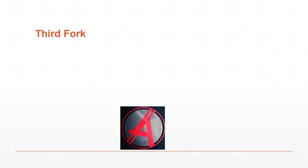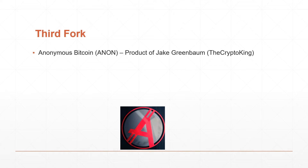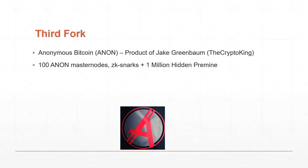The third fork is the Anonymous Bitcoin fork. It's a product of Jake Greenbaum. The main selling features of this coin are the masternodes, which require 100 Anonymous Bitcoins, and a hidden pre-mine. While I'm not exactly sure if there is a pre-mine, when I did my calculations I realized there was an inconsistency in how many coins should be circulating during the fork — there should be around 22.5 to 23 million coins. But in their white paper's executive summary, they said there were going to be 24 million coins, so I'm thinking they're going to pre-mine 1 million coins without telling us.